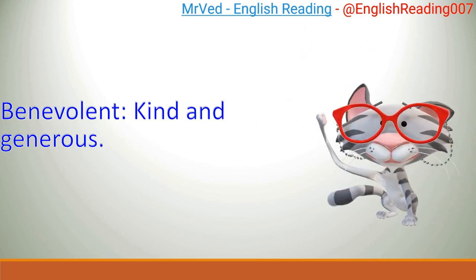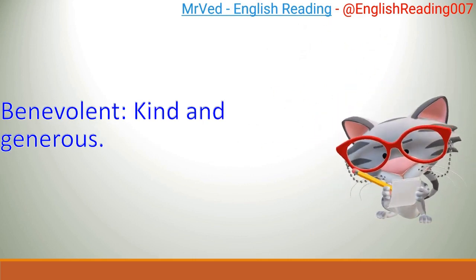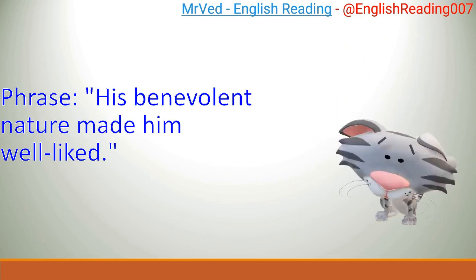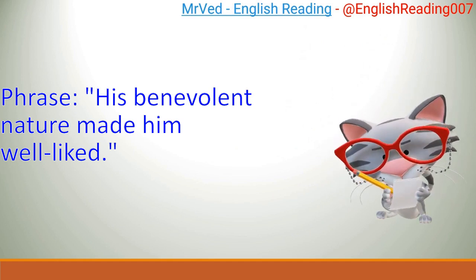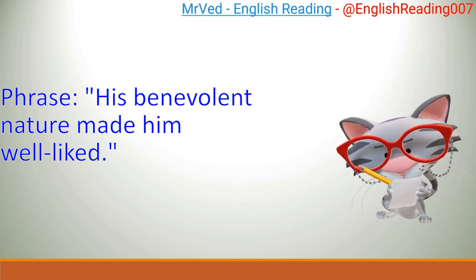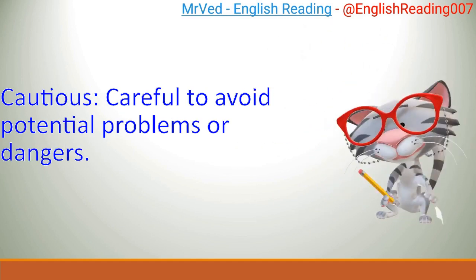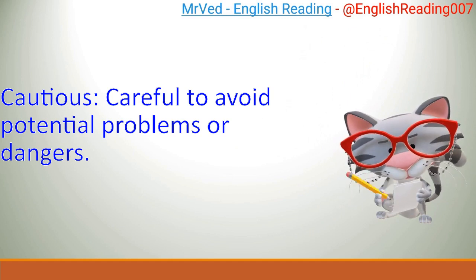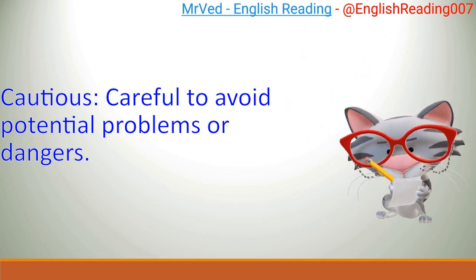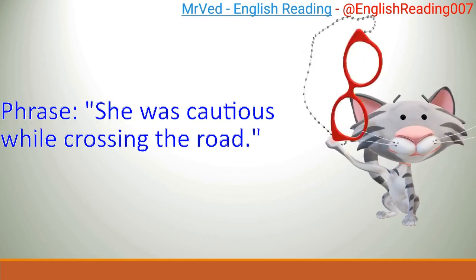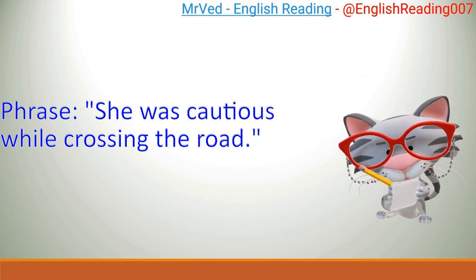Benevolent: kind and generous. Example: His benevolent nature made him well-liked. Cautious: careful to avoid potential problems or dangers. Example: She was cautious while crossing the road.